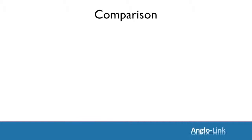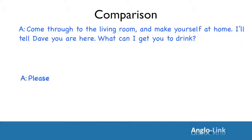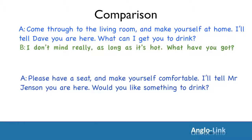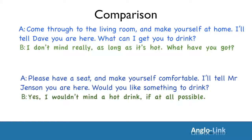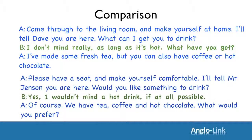Let's look at the next section. The starting sentence in the informal dialogue is: 'Come through to the living room and make yourself at home. I'll tell Dave you're here. What can I get you to drink?' Let's look at the formal style: 'Please have a seat and make yourself comfortable. I'll tell Mr. Jensen you're here. Would you like something to drink?' Informal response: 'I don't mind really, as long as it's hot. What have you got?' More formal: 'Yes, I wouldn't mind a hot drink, if at all possible.' Then informal: 'I've made some fresh tea, but you can also have coffee or hot chocolate.' Formal: 'Of course. We have tea, coffee and hot chocolate. What would you prefer?'